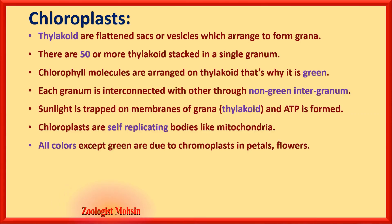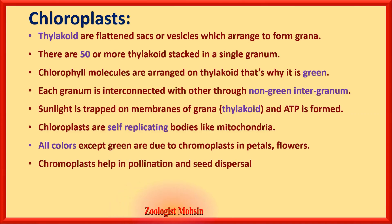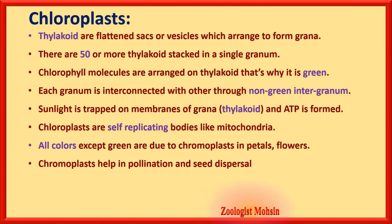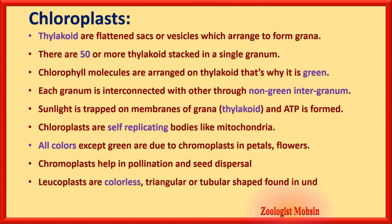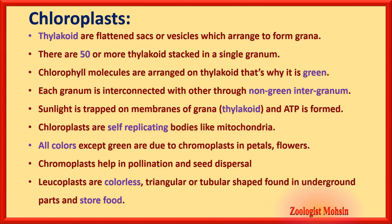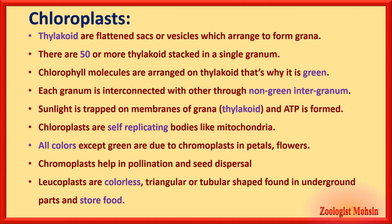All colors except green in petals, flowers, and ripened fruits are due to chromoplasts — the second type of plastid. Chromoplasts help in pollination and seed dispersal by attracting birds and insects. The third type of plastid is leucoplasts, which are colorless. Leucoplasts are triangular in shape — an important MCQ from past papers. They are found in underground parts like roots and mainly store food.